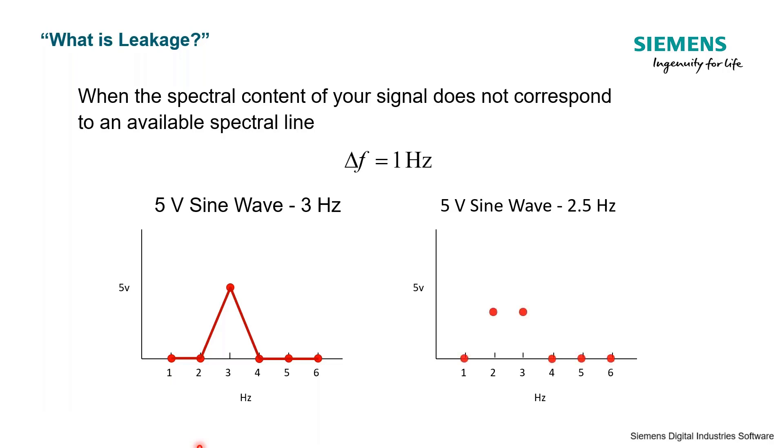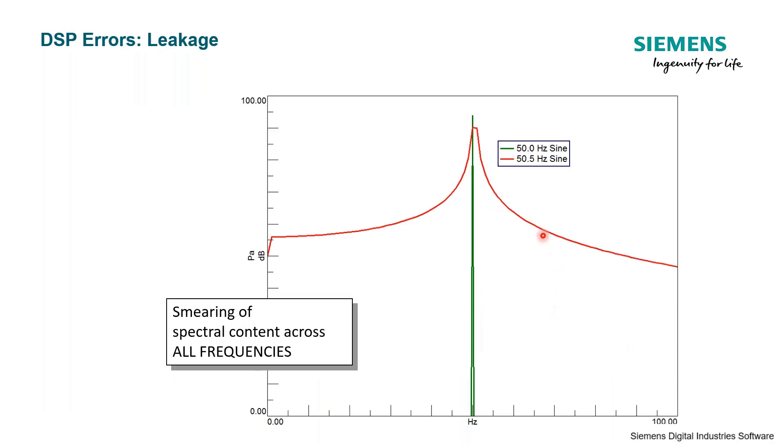But unfortunately, that won't happen. Some of us may think that that amplitude would be split between this 2 hertz and 3 hertz because we don't have a 2.5 hertz spectral line. But that also doesn't happen. That actually wouldn't be that bad if it did happen that way. The reality is much worse.